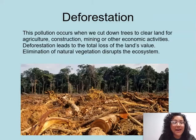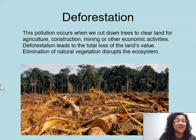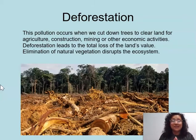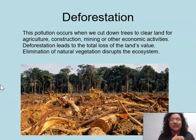The fourth type is deforestation. This pollution occurs when we cut down trees to clear land for agriculture — that's farming — construction, mining, or other economic activities. Deforestation leads to a total loss of the land's value. I want you to think about animal habitats — what do you think is happening to the animals living in these habitats when their home and ecosystem is completely disrupted by deforestation?